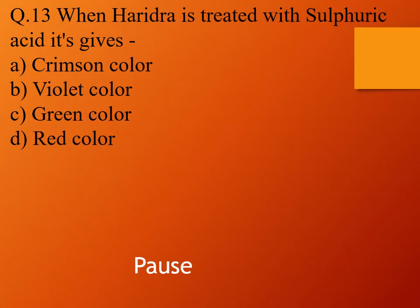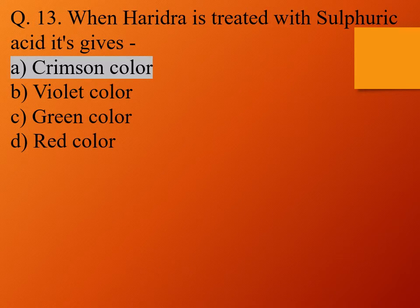Question 13. When haridra is treated with sulfuric acid, it gives: option A, crimson color; option B, violet color; option C, green color; and option D, red color. The right answer is option A, crimson color. So when haridra is treated with sulfuric acid, it gives a crimson color.